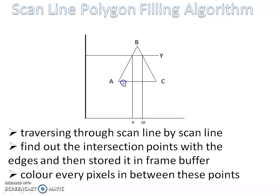Here, the polygon triangle is represented — triangle ABC. The edges are AB, BC, and AC. The scan line Y passes through, intersecting AB and BC edges at intersection points. The X coordinates of those points are 6 and 10. We have to traverse scan line by scan line, find each intersection point with the edges, store these points in the frame buffer — the 6 and 10 points — and then color every pixel in between, from 6 to 10, with a specified color.